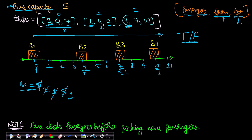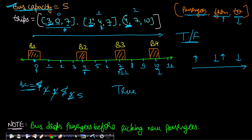At location ten, four passengers leave so capacity goes from one back to five, and there are no more trips. We successfully simulated all passenger movement without running out of bus capacity, so we return true. If at any point capacity were exceeded — for example if the second trip had three passengers instead of one, the bus couldn't accommodate them at location four — we would return false.